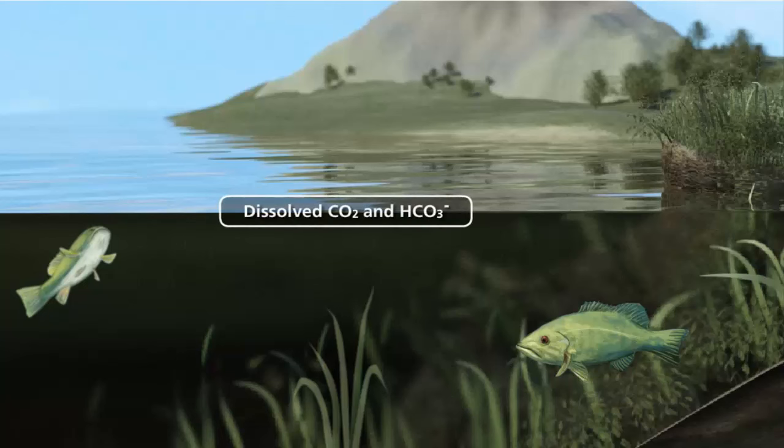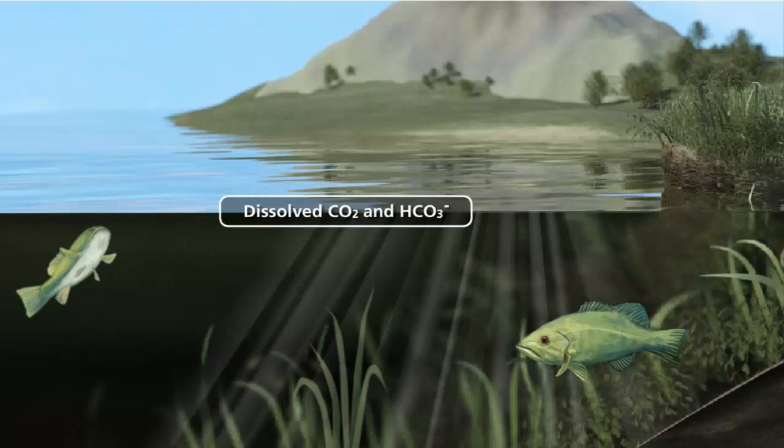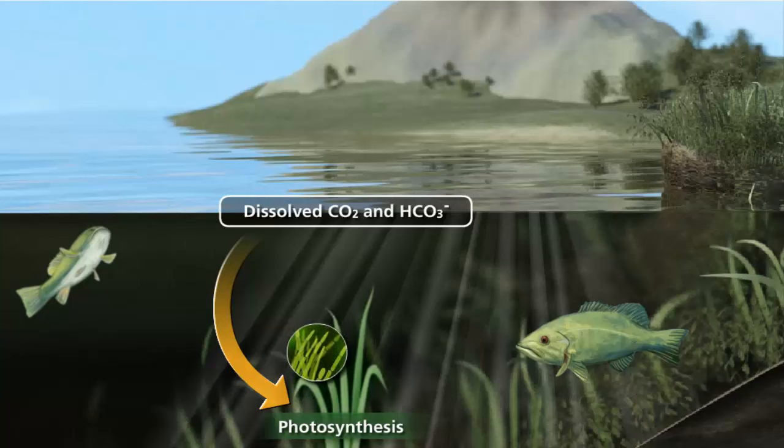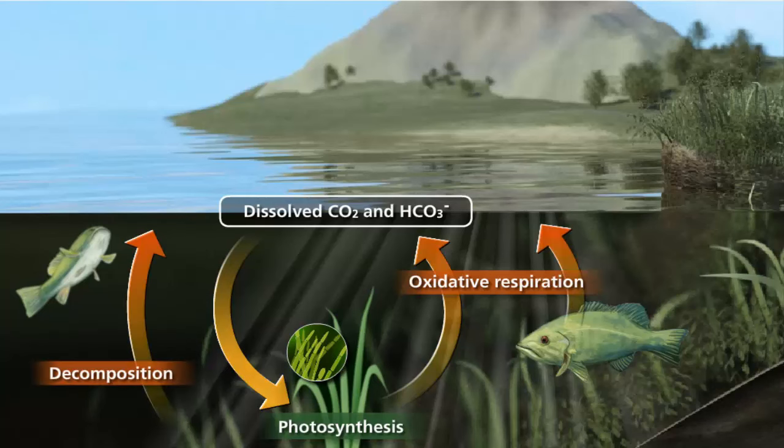Carbon is present in water as dissolved carbon dioxide and bicarbonate ions. Both are sources of carbon for photosynthesis and are taken up by algae and aquatic plants. Carbon dioxide is released into the water through oxidative respiration in these organisms and in other aquatic organisms such as fish and in decomposition. Carbon dioxide is also exchanged between the water and the atmosphere.